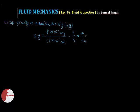Since specific weight equals rho times g and the g cancels out in the ratio, specific gravity reduces to rho divided by rho of the standard fluid — that's why it is also called relative density.